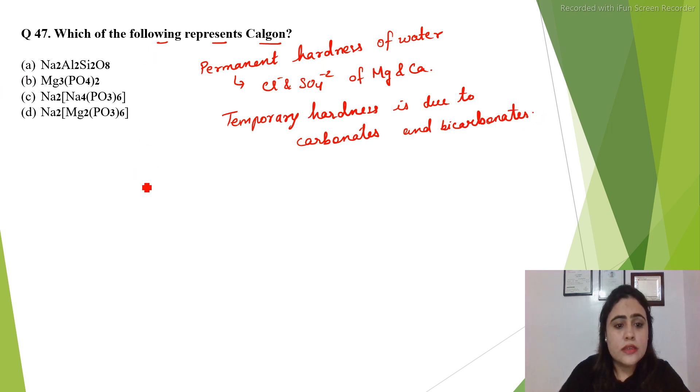Calgon is a compound which is Na6P6O18, sodium hexameta phosphate. This compound is known as calgon and it is added to hard water.